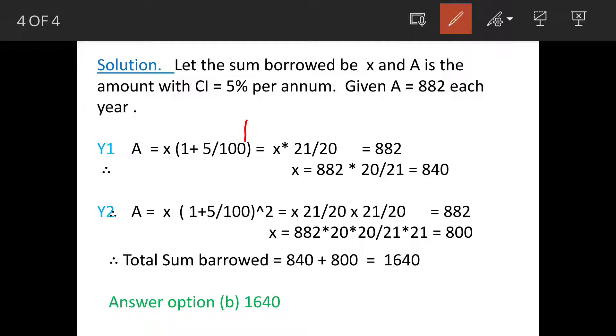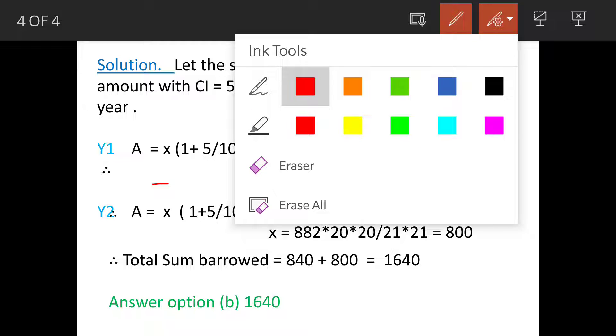Here t is 1, so this becomes x times 21/20 equals 882. When you simplify this, the value of x for the first year is 840.